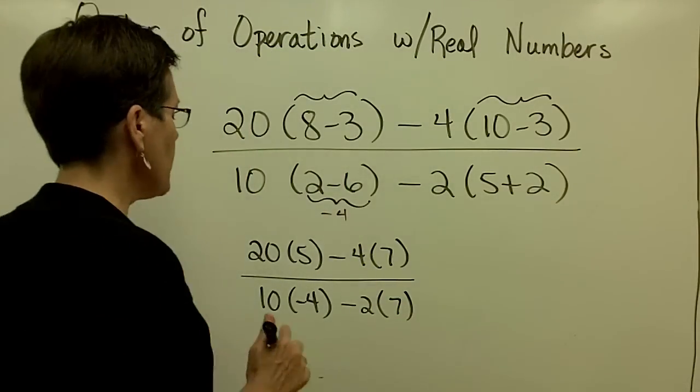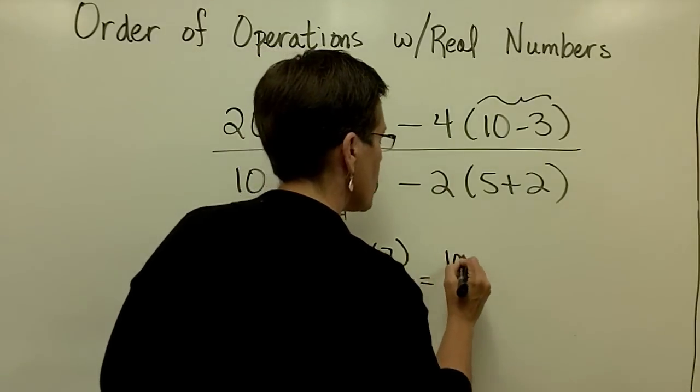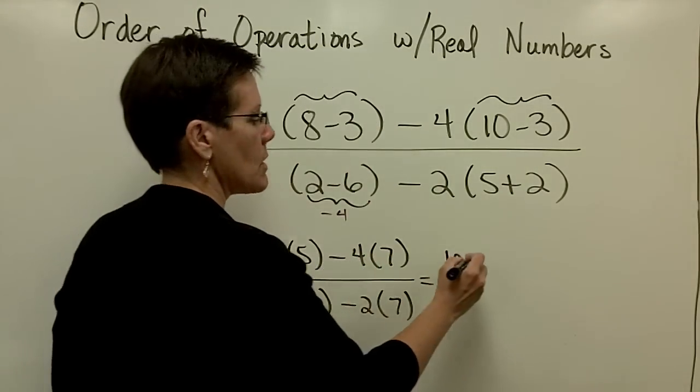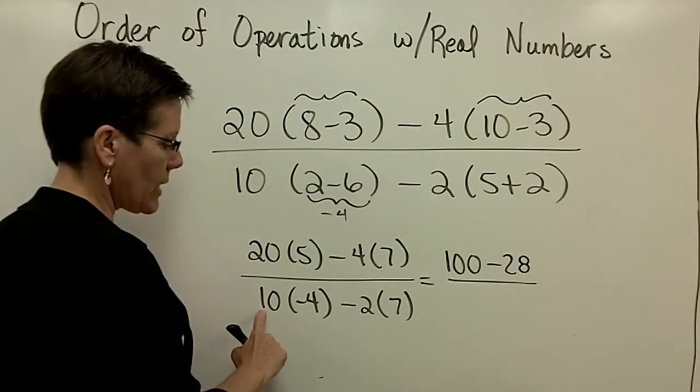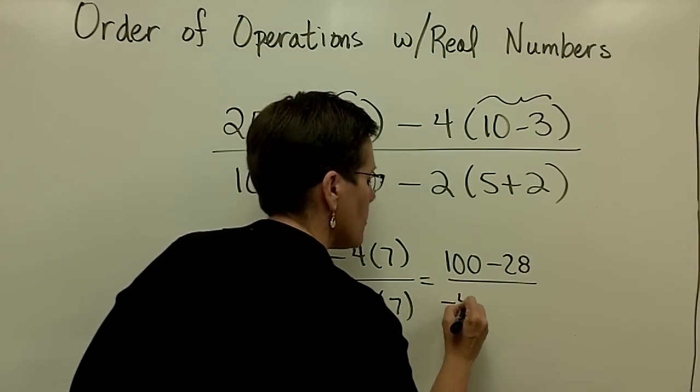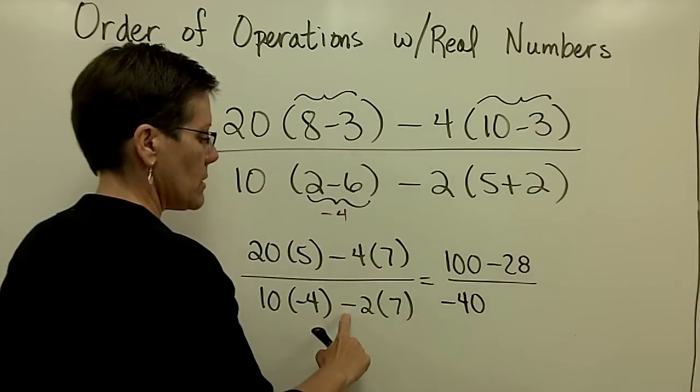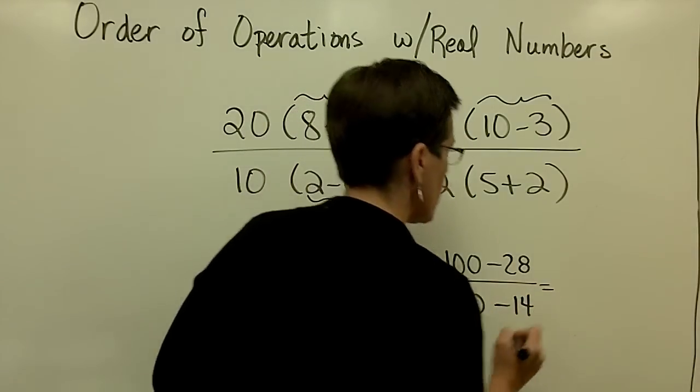Let's now work left to right in the numerator. So I have 20 times 5 is 100, and 4 times 7 is 28. Down here, 10 times a negative 4, positive times a negative is a negative 40. And I'm going to subtract 2 times 7, which is 14.